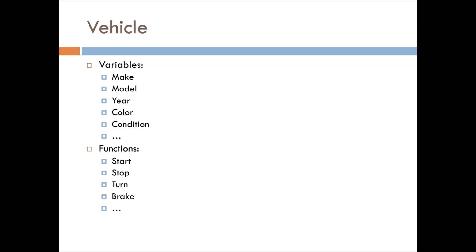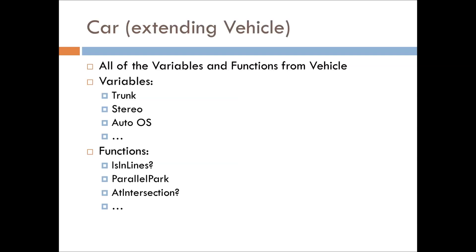Now, Car extending Vehicle — all of the variables and functions that were part of Vehicle are now on the Car. In addition to what Vehicle can do, Car has a trunk, a stereo. Many newer cars have some sort of onboard device or computer system, like Toyota or GM — whatever brand you can think of probably has some sort of operating system. And there are other items that define a Car.